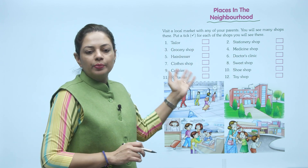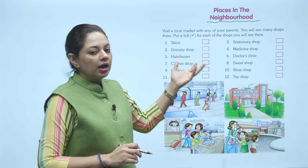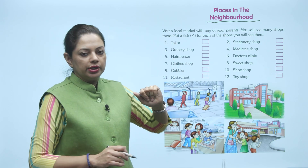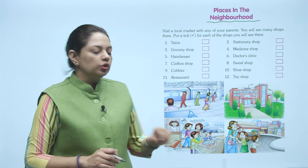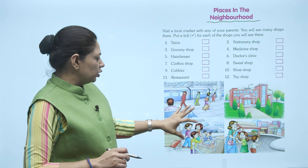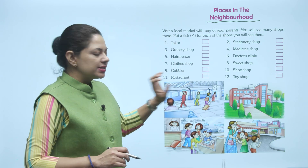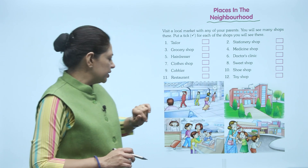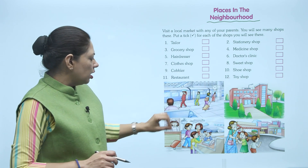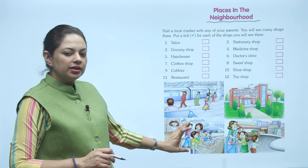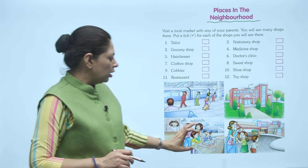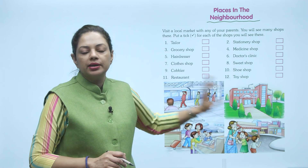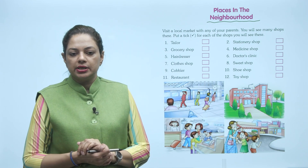Toh joh bhi shop aapko market mein milengi, aap unko tick karoge. Aur picture mein dekho — ek railway station ki picture hai, ek school ki picture hai, ek ticketing ki picture hai, aur ek market place ki picture dikhai hai.